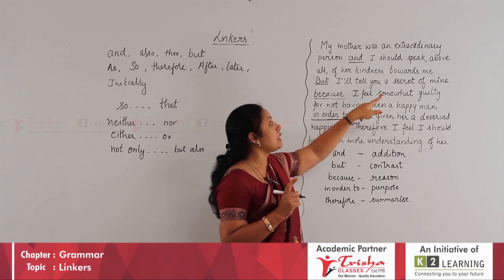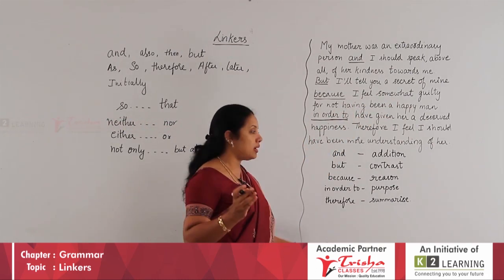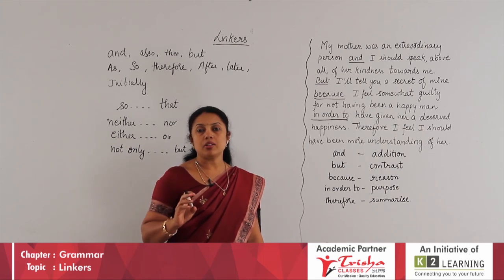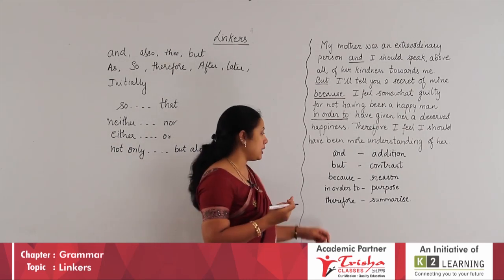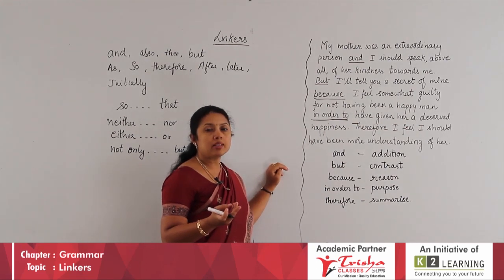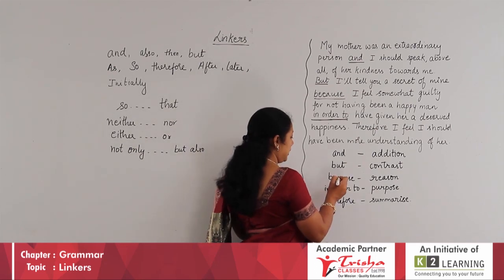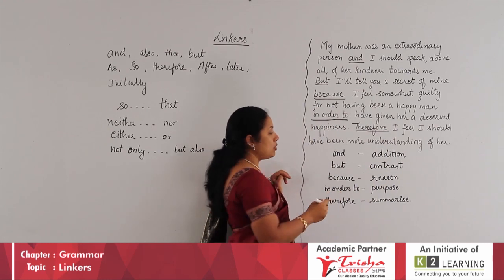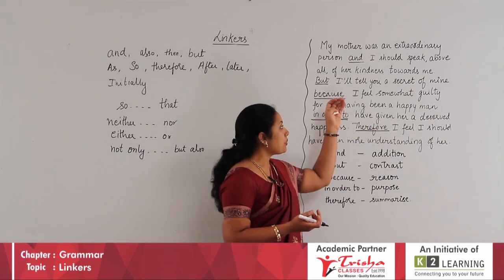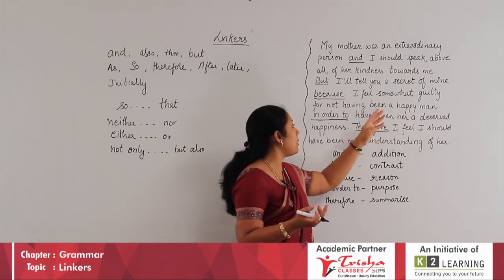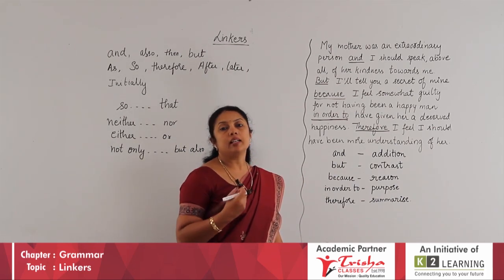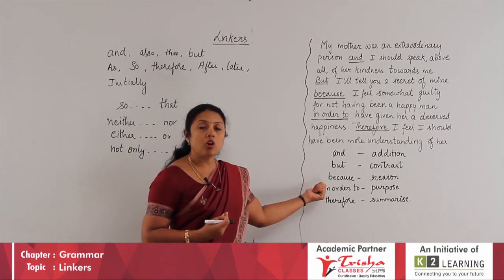'BUT I will tell you a secret of mine.' He stops there and gives a contrast — BUT is used for contrasting. 'BECAUSE I feel somewhat guilty for not having been a happy man in order to give her a deserved happiness.' BECAUSE talks about reason — he is giving the reason why he feels guilty. 'IN ORDER TO give her happiness' — IN ORDER TO talks about purpose — it explains why he has not kept his mother happy.